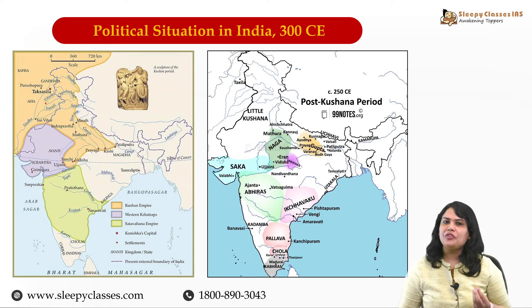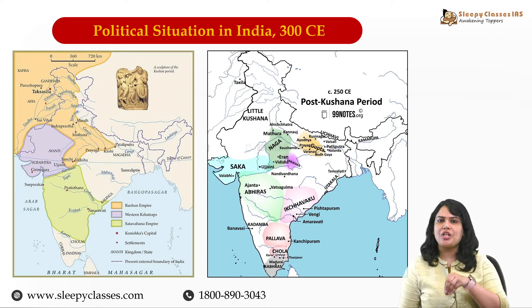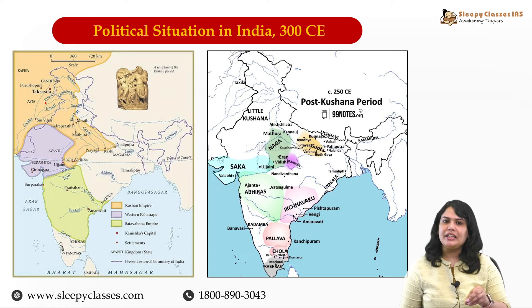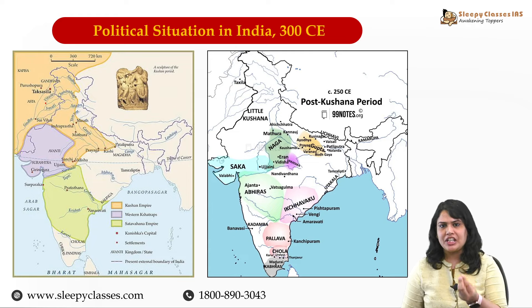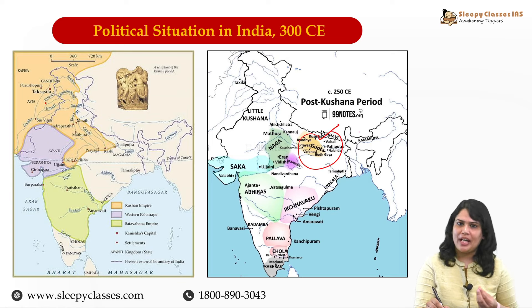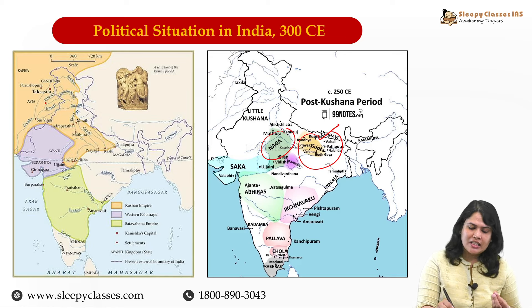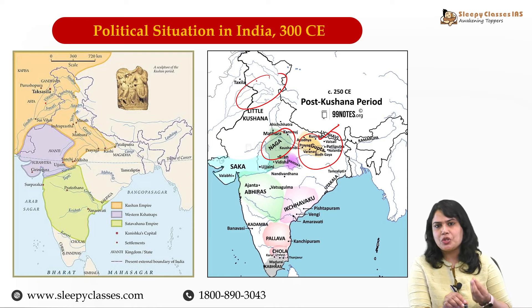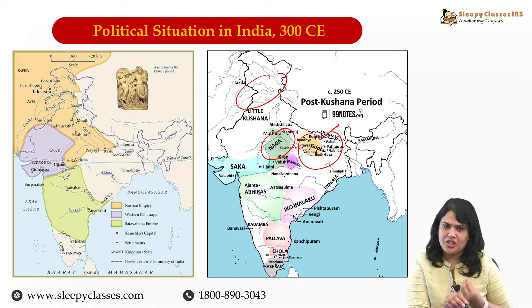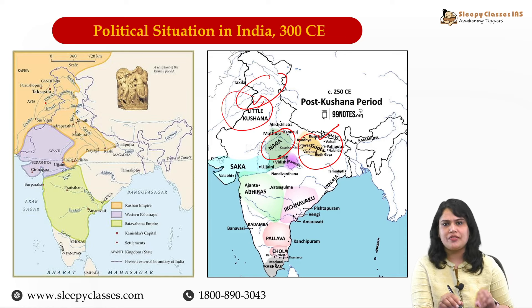Kahaani kuch aisi hai - around mid of 3rd century CE, that is 250 CE, the Kushana power had declined. And on the ruins of the Kushana empire, we will see the rise of many small regional powers. For example, in and around Allahabad or Prayagraj, the Guptas were rising; Nagas in central India. In the north-western part, the Yodhyas and the Arjunyas were emerging as a major power, and the Kushanas were confined to a small part in north-western India.